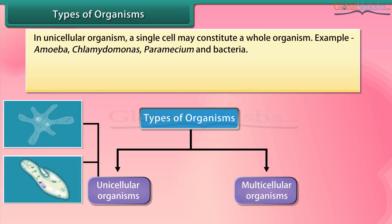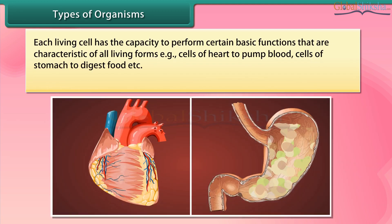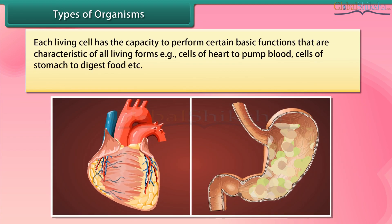Types of organisms: unicellular organisms and multicellular organisms. In unicellular organisms, a single cell may constitute a whole organism. Examples include amoeba, chlamydomonas, paramecium, and bacteria. In multicellular organisms, many cells group together in a single body and assume different functions in it to form various body parts. Examples include some fungi, plants, and animals.